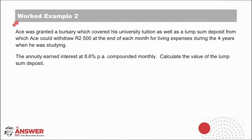Let's look at worked example 2. Ace was granted a bursary which covered his university tuition, as well as a lump sum deposit from which Ace could withdraw R2,500 at the end of each month for living expenses during the four years he was studying. The annuity earned interest at 8.6% per annum compounded monthly. Calculate the value of the lump sum deposit. This is not a loan question, but it fits the same category: the deposit is a present value and the withdrawals are payments in the future whose value will be scaled back. So we simply apply our information to the present value annuity formula.